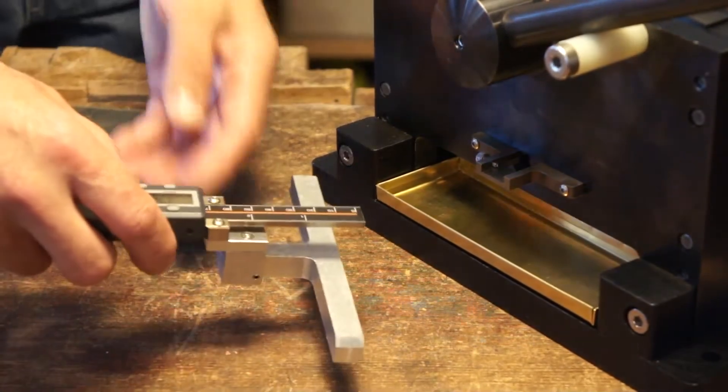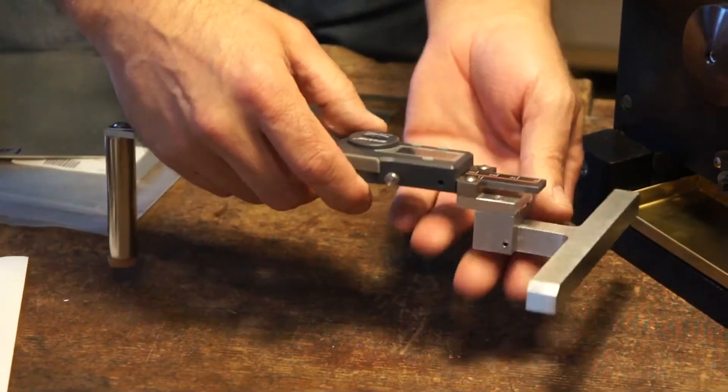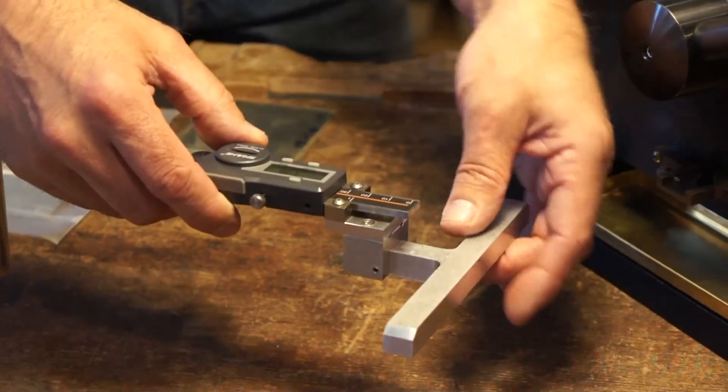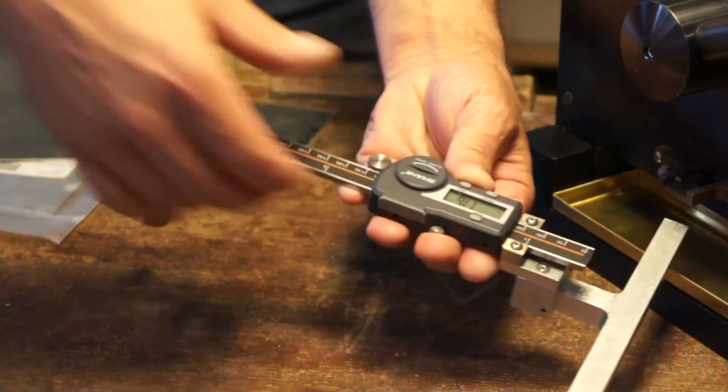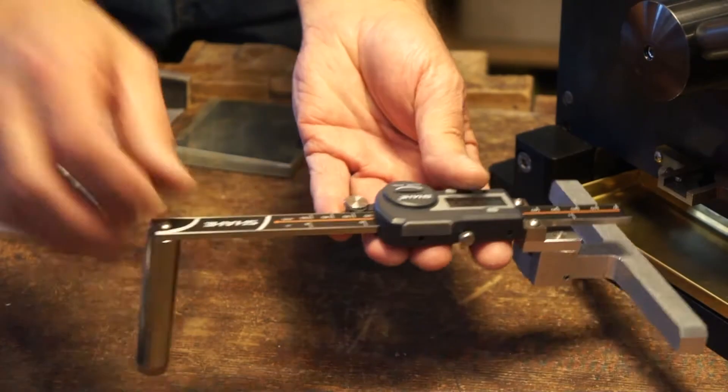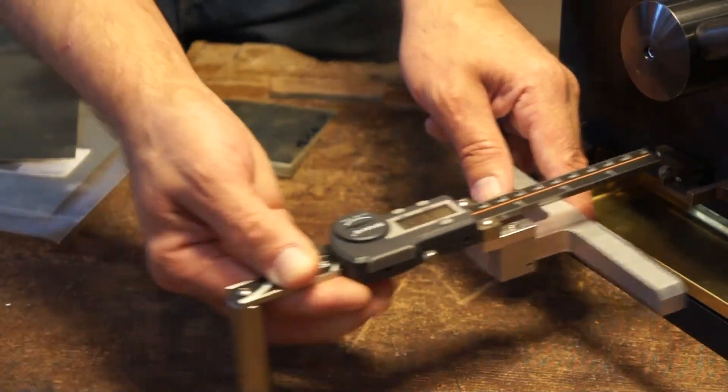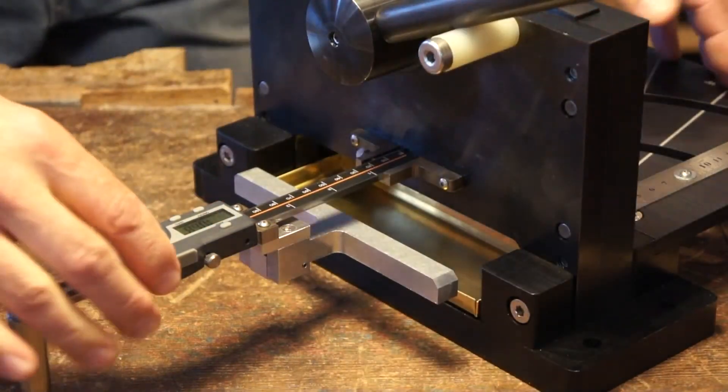The biggest modification that I did was I took the depth gauge that came with this tool and this foot here is part of the original but I modified a digital gauge and added a bracket here so I could get precision on the depth of cut.